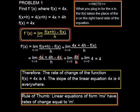So as a rule of thumb, linear equations of form mx have rates of change equal to m. And that's why you can solve B all by yourself.